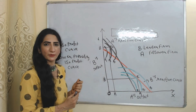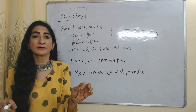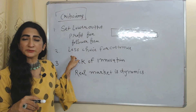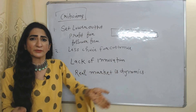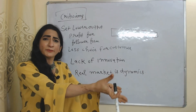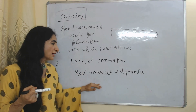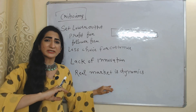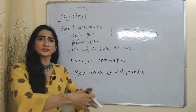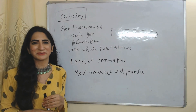Now we will look at criticisms. This model sets a lower output and profit for the follower firm, but it is possible for the follower to produce more and earn more profit. There are also fewer choices for customers if one firm simply copies the other. There is a lack of innovation when one firm blindly follows the other. Finally, the real market is very dynamic — there are so many changes, ideas, and technologies that it is not possible for one firm to simply follow another. That is all about the Stackelberg model. Thank you so much for watching.